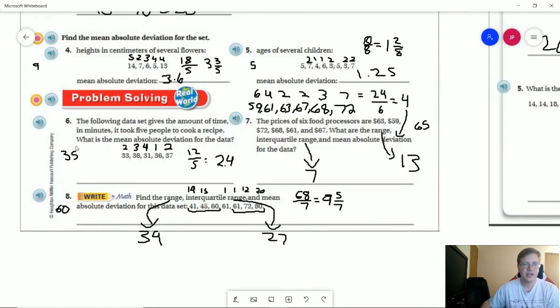For number six, our mean is 35. And so we end up with a mean absolute deviation of 2.4.